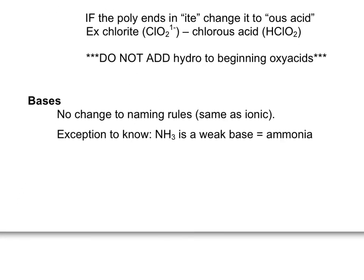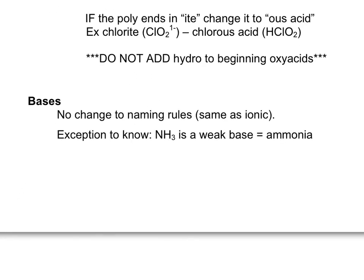There are no changes or special rules for naming bases. You name them just like regular ionic compounds. Name the metal, then name the poly, which will always be hydroxide. There are a couple exceptions. One we want you to know is ammonia, NH₃. It's an example of a weak base. Please memorize and recognize NH₃ as ammonia.